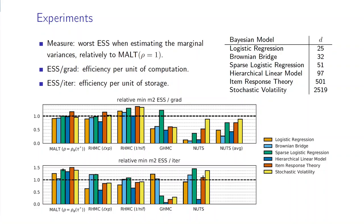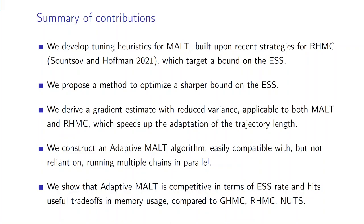We can see that when it comes down to computation, randomized HMC with uniform jitter seems to perform slightly better than MALT, whereas MALT seems to perform slightly better when it comes down to storage.